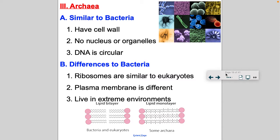Archaea are very similar to bacteria. First, they are both considered prokaryotes — no nucleus or organelles. They have a cell wall, not like bacteria's, but they do have a cell wall, and their DNA is circular.